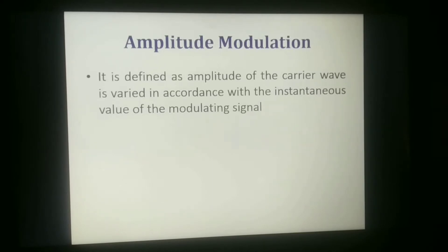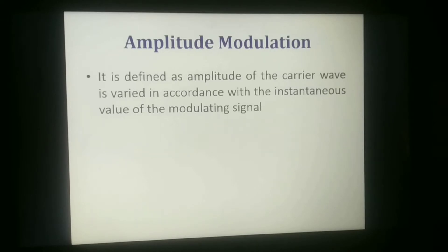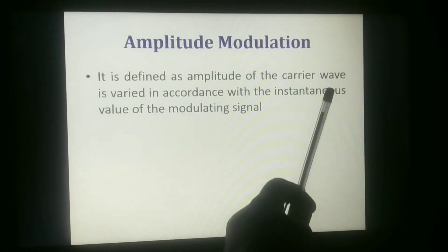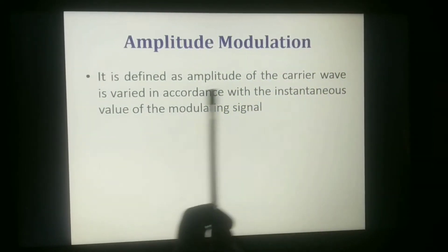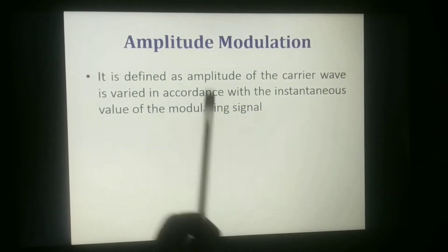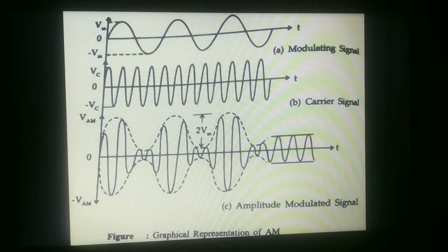Now we discuss amplitude modulation. In the previous class, we discussed modulation basics. In this class, I am going to explain about amplitude modulation. The definition: amplitude modulation is nothing but the amplitude of the carrier wave is varied with respect to the instantaneous value of the modulating signal.